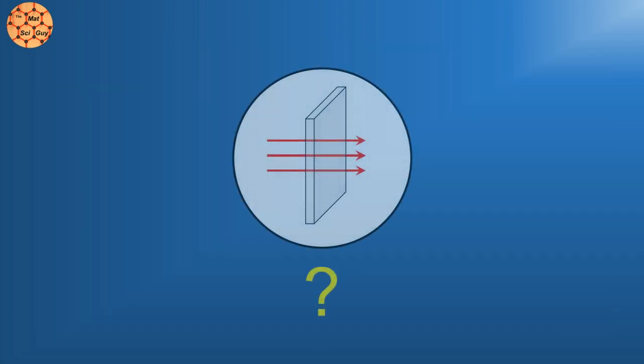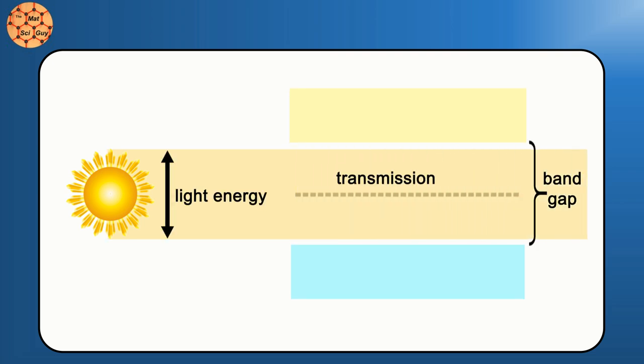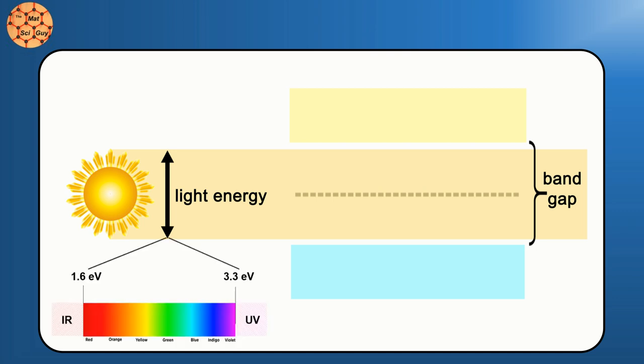So, what does all this mean for transparency? Well, if the energy of incoming light is equal to the difference between an occupied and unoccupied electron state, the electron can get excited to the higher state, and the light gets absorbed. This means that for a material to be transparent, this band gap needs to be higher than the energy of visible light. In terms of electron volts, a unit of energy, visible light ranges from about 1.6 to 3.3.